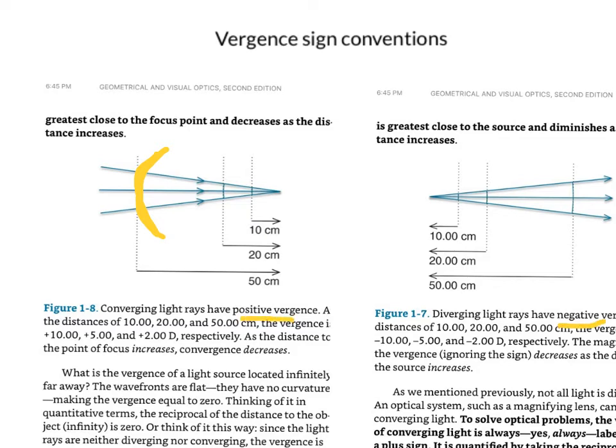A positive vergence is when you have light rays converging to one single point as you have here. You have converging light rays.